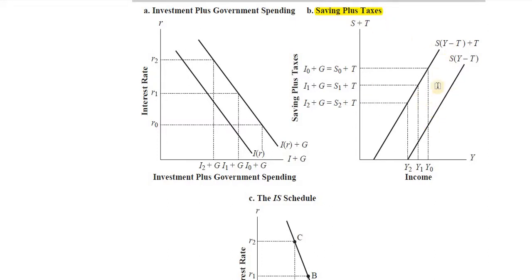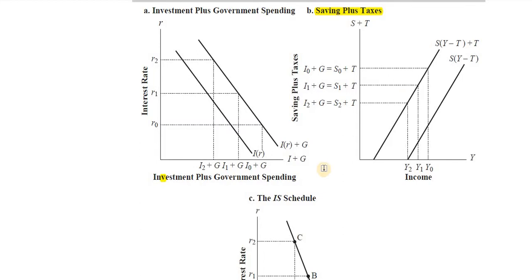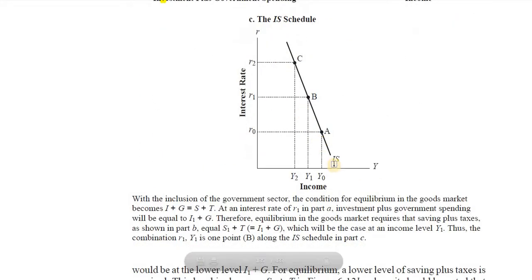Taxes got incorporated, the saving-plus-taxes curve shifted upwards, and we got a new equilibrium. At rate of interest R0, we have investment plus government spending at a certain point. For equilibrium, saving plus taxes must equal the same extent. As interest rate goes up, investment plus government spending falls, income falls from Y0 to Y1, and that is how we derive the IS curve.